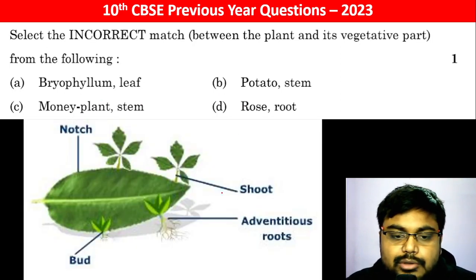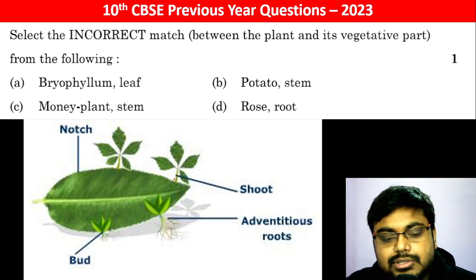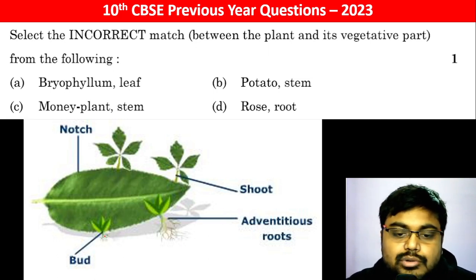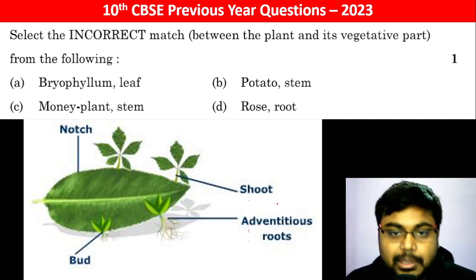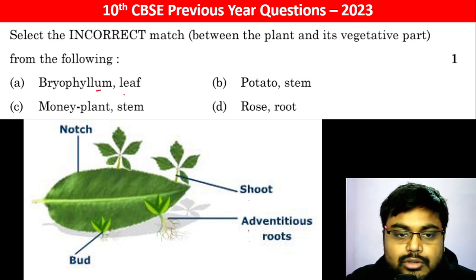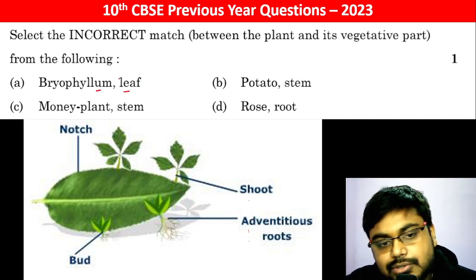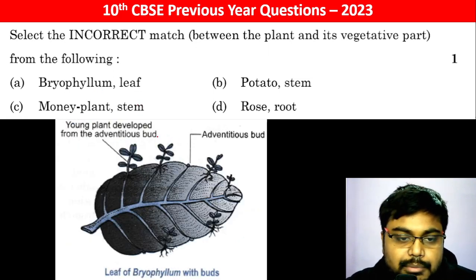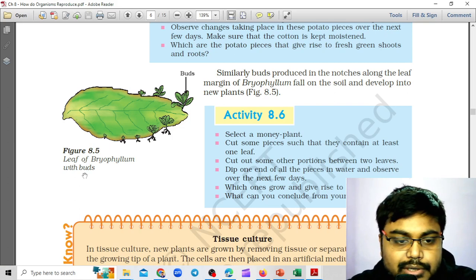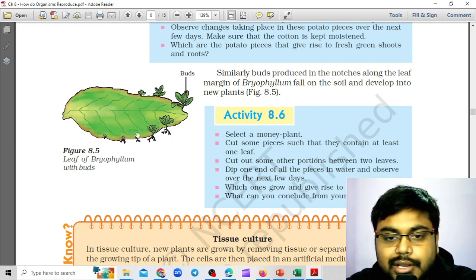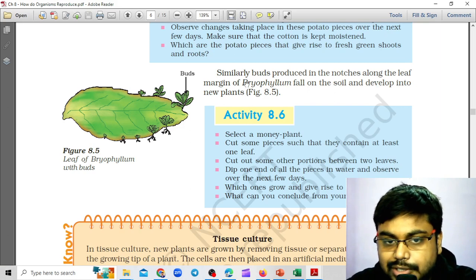In Bryophyllum, the leaf has buds on its edges, and shoots and adventitious roots grow from them. Therefore, the leaf is capable of reproduction - this is called leaf propagation. Young plants develop from adventitious buds. As seen in the NCERT, the buds produce in the notches along the leaf margin of Bryophyllum, fall into the soil, and develop into new plants.